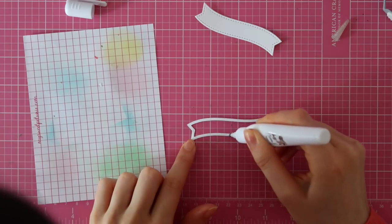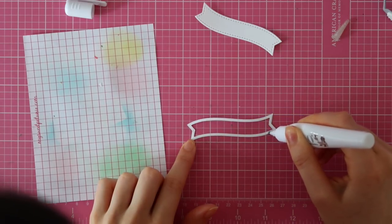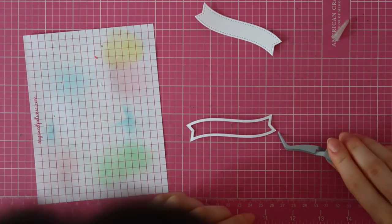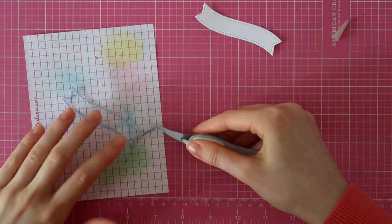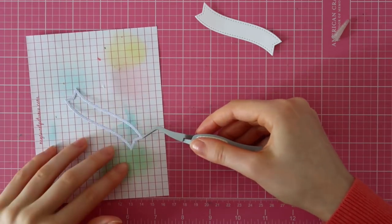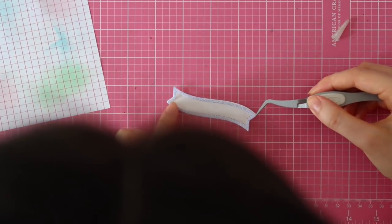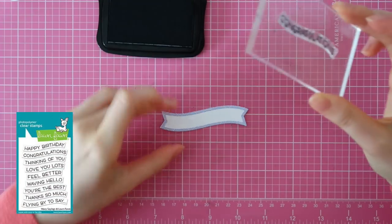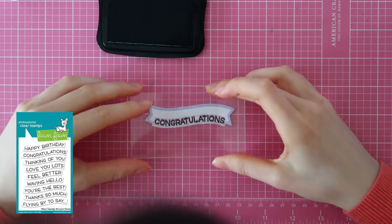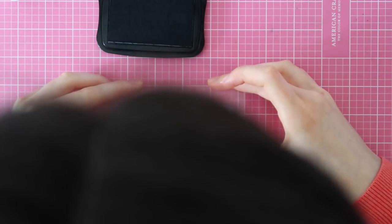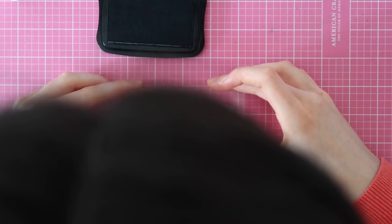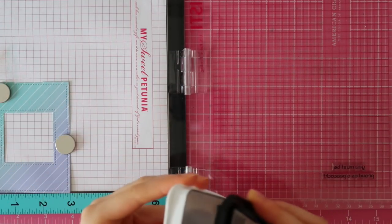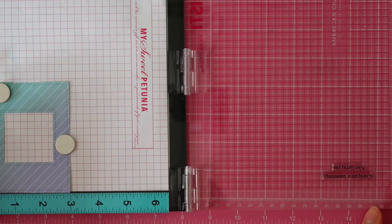I am using the Fancy Wavy Banner dies from Lawn Fawn to create a fun banner for my sentiment. I die cut one of the banners out of some pattern paper and then I die cut one of them out of white cardstock. I am using some of that adhesive from the Tonic Nouveau Smooth Precision Adhesive Pen to adhere that frame. Then I am using the Wavy Banner Sayings stamp set from Lawn Fawn to stamp my congratulations sentiment. I'm also using the Peacock Before and After stamp set and some Memento Tuxedo Black ink to stamp the rest of the sentiment.